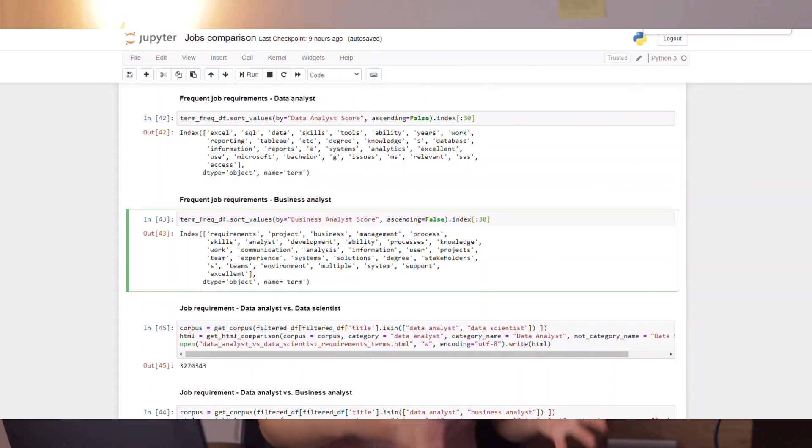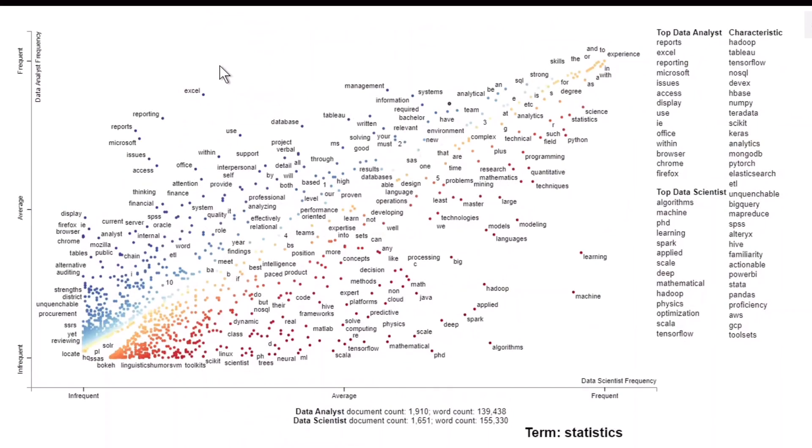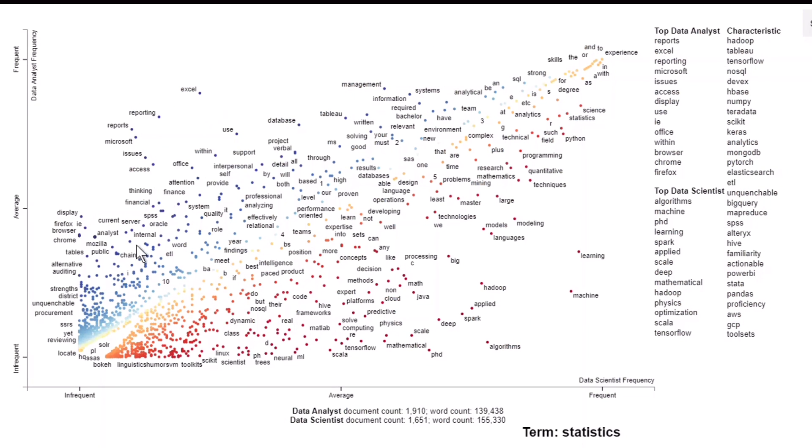This kind of plot compares the most common terms in the job description of the data scientist and data analyst jobs. The more blue the dot is, the more it is associated with the title data analyst, and the more red the dot is, the more it is associated with the title data scientist.